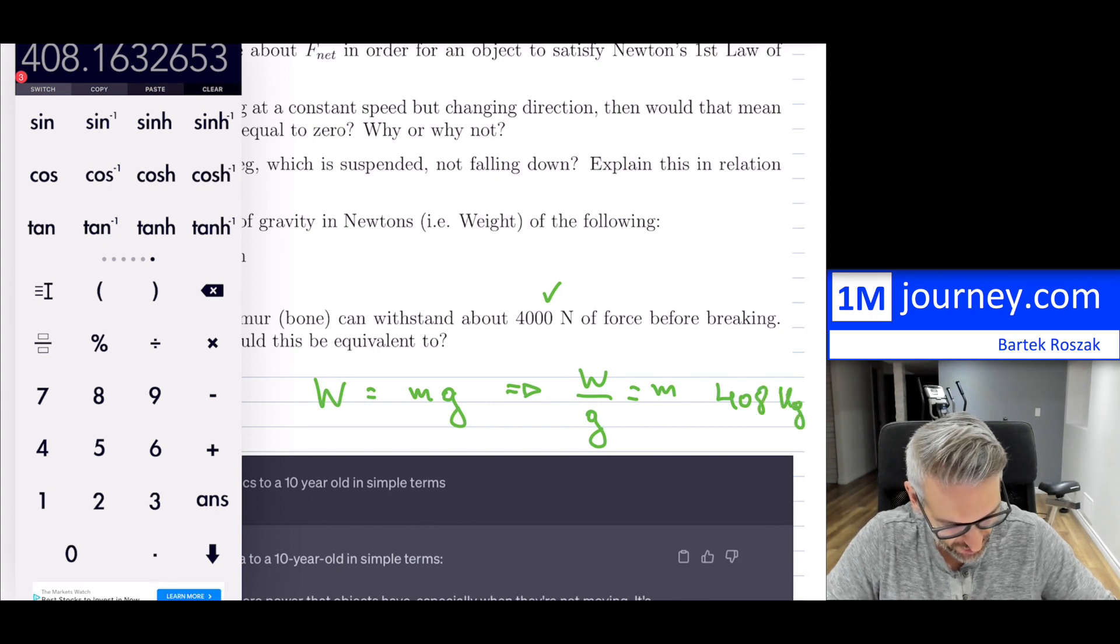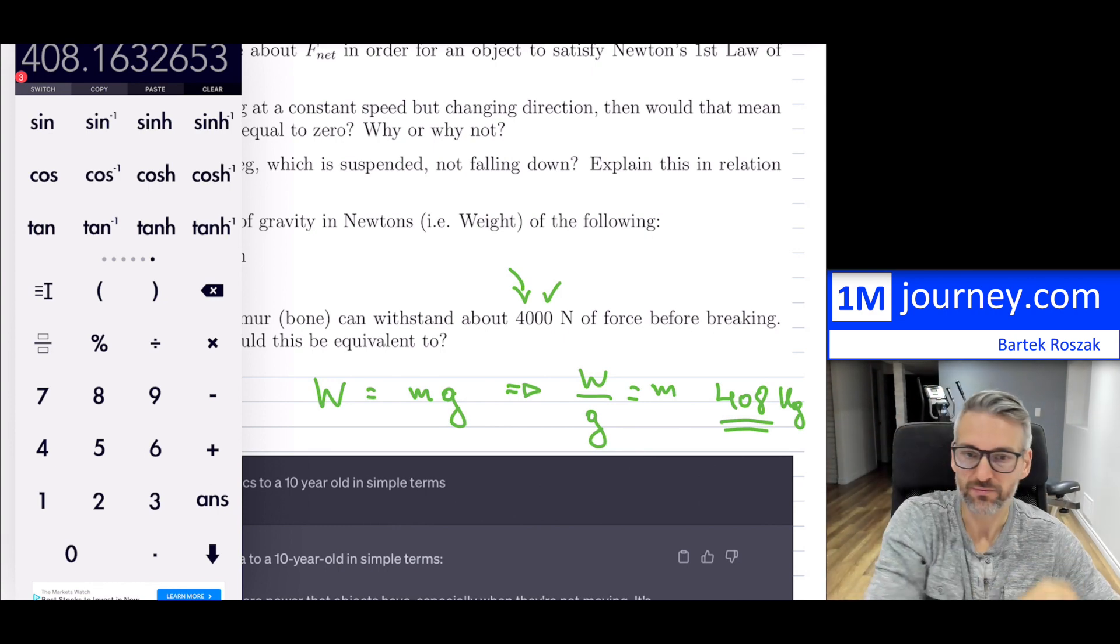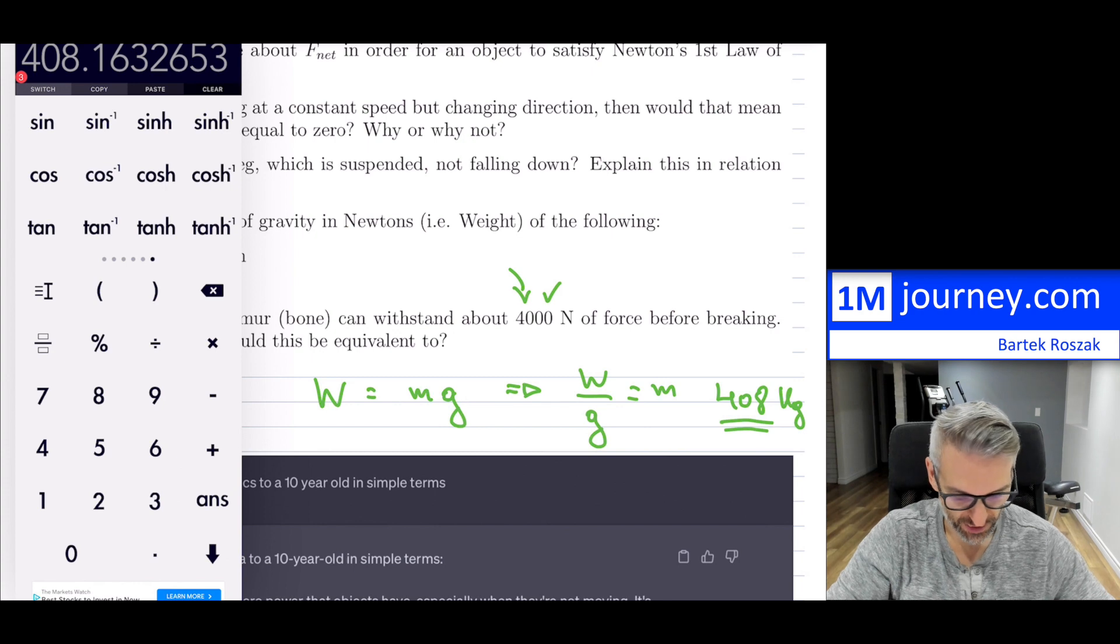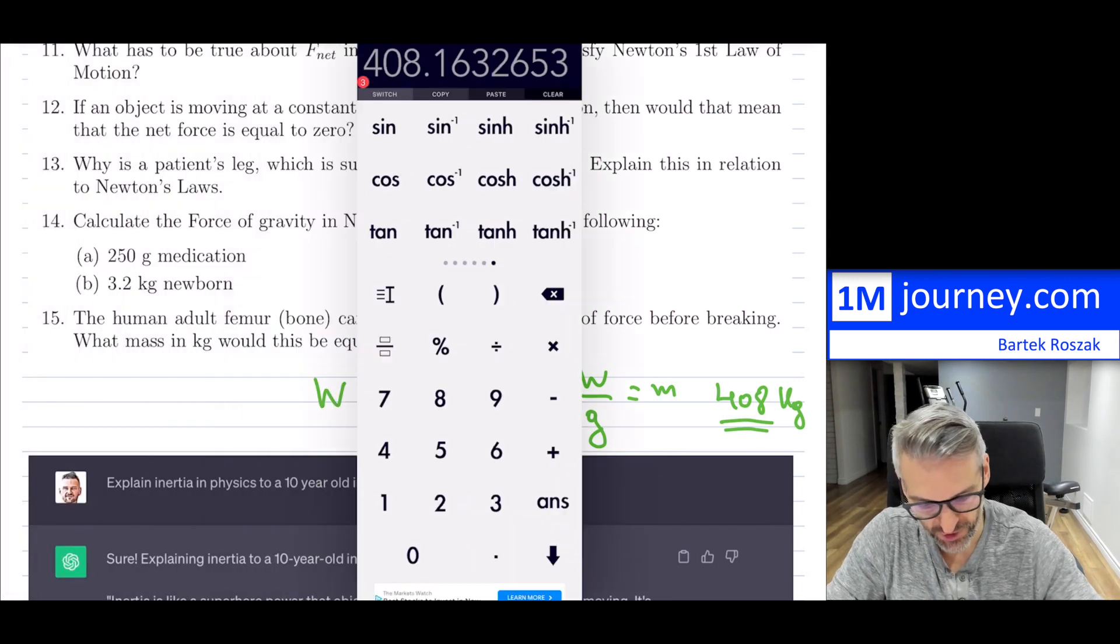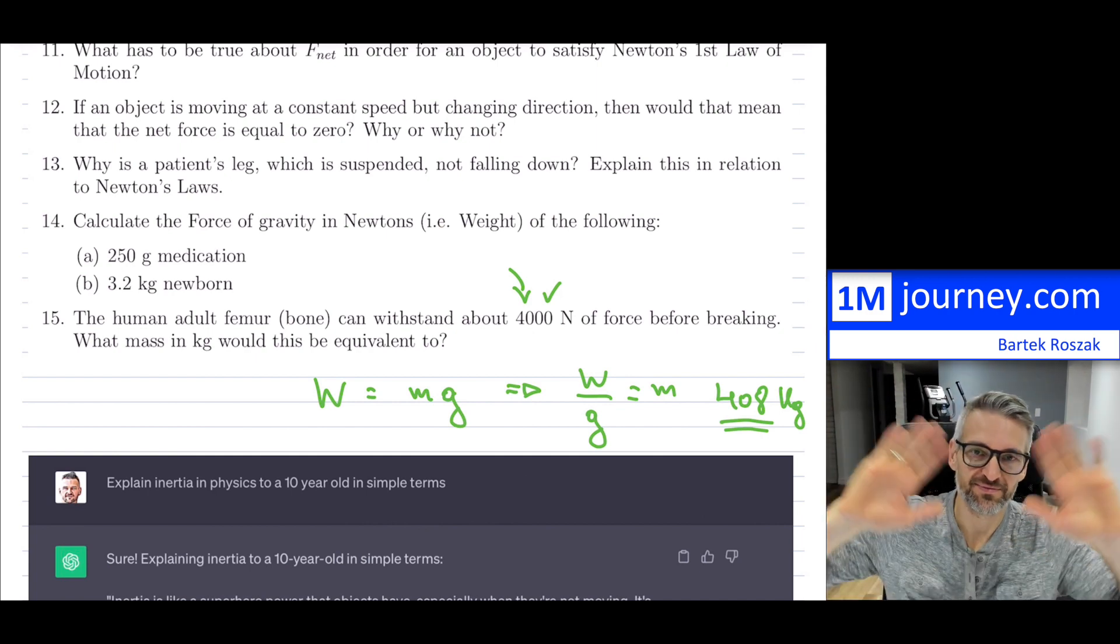This one's only to one sig fig, so you can say 400 kilograms approximately. That's what this would be. That is all that you would do here. All right, so that completes these examples. Thanks for watching, bye everybody.